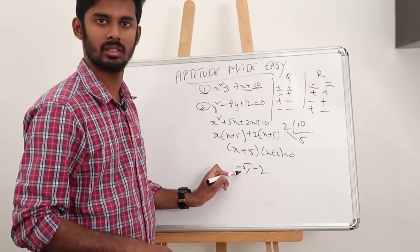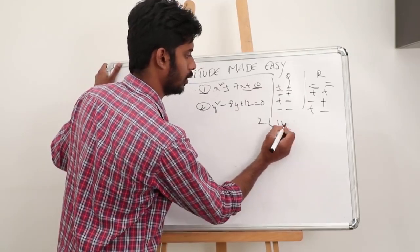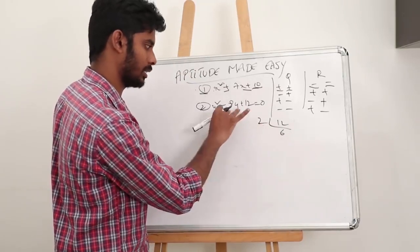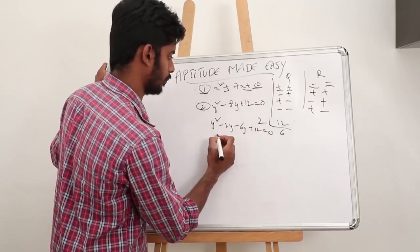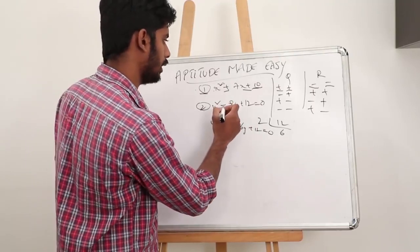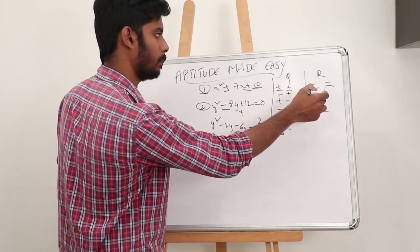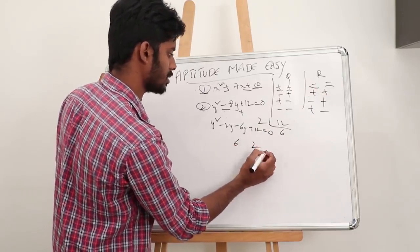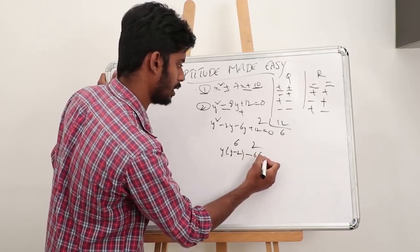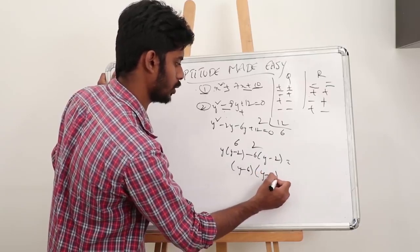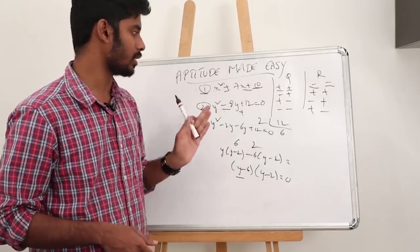Coming to this next question, we resolve 12 in the form of the coefficient — 12 is 2 into 6. In the question, the signs are minus and plus, so answers will be plus and plus: plus 6 or plus 2. We can verify: y minus 2 and minus 6 as common, giving y minus 6 into y minus 2 equals 0, so y is either 6 or y is 2. We got the same answer in one single step.